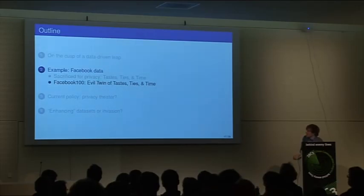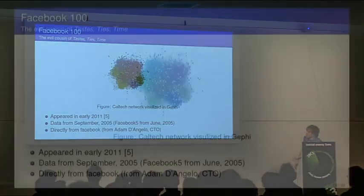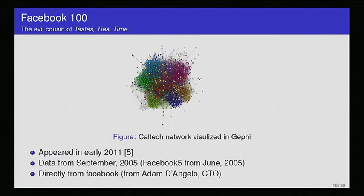Now I'm going to talk about the Facebook 100, which is what I call the evil twin of this Tastes, Ties, and Time data set. It was actually 100 different college friendship networks. Here's a visualization of the Caltech network, which is one of the smaller ones. This data set appeared in early 2011, although the data itself originates from September 2005. There's also a smaller data set released a few years ago called the Facebook 5. And this data came directly from Facebook. It came from the CTO of Facebook, Adam D'Angelo. That's what the paper that introduced this data says.